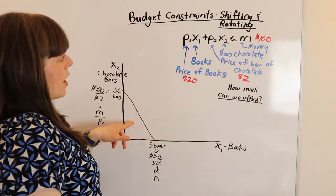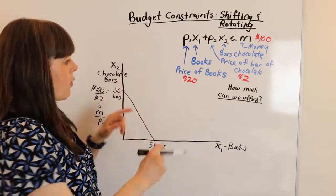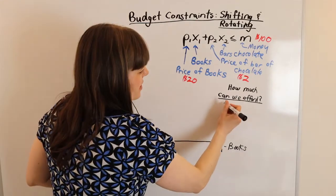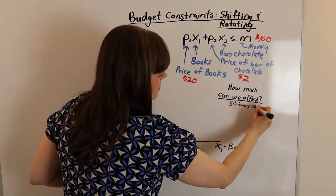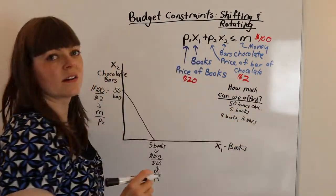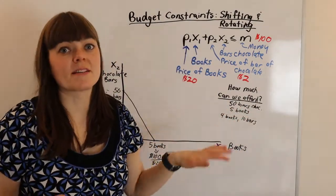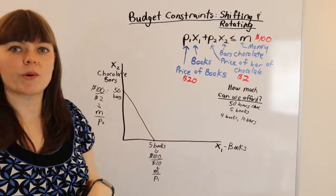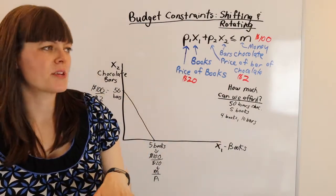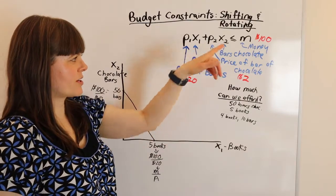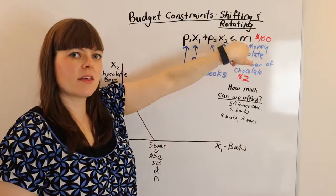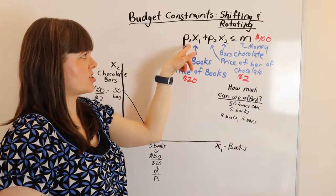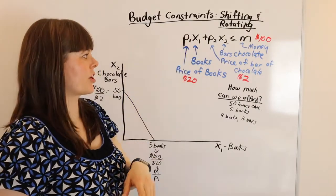So when does it shift? How much can we afford? We can afford. So those are just three bundles that we can afford. Back to what I was talking about before. We want to know when does it shift and when does it rotate? So we might ask ourselves, one of them is going to be in response to a change in M. The other will be in response to a change in the price of one of the goods.